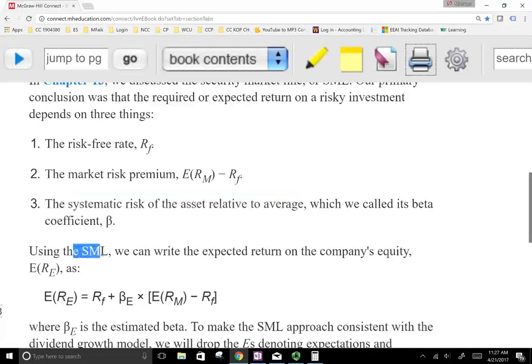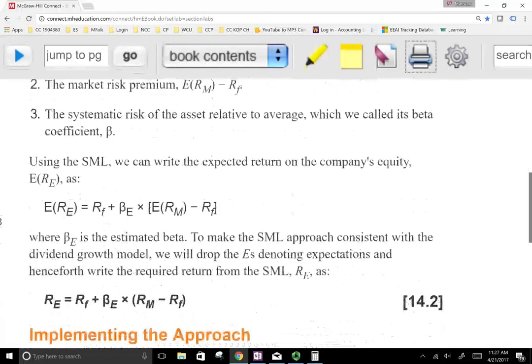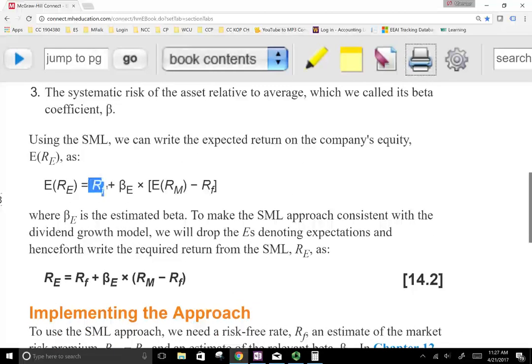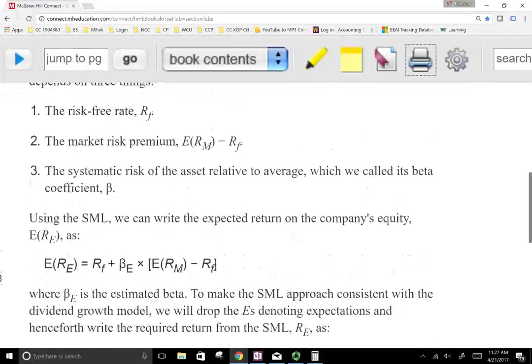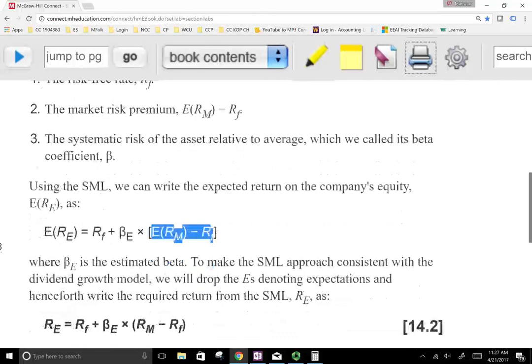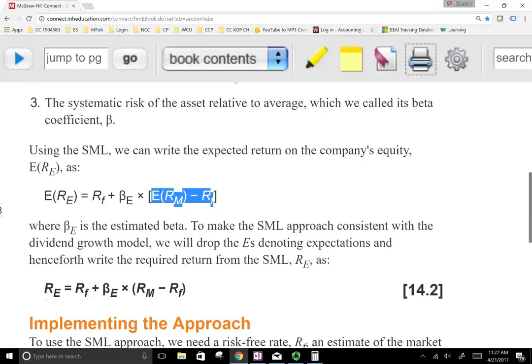So using the SML, we can rewrite the expected return on the company's common equity. The expected return, just like we looked at in the prior chapter, is the risk-free rate. We're going to start with the risk-free rate, and we have to earn more than the risk-free rate. Then we're going to take the market premium, multiply it by beta, and add it to the risk-free rate. So the expected return, R of E, is the risk-free rate plus beta times the risk premium.